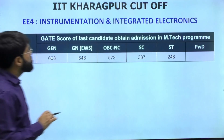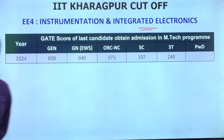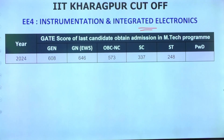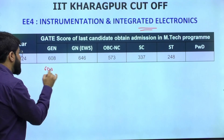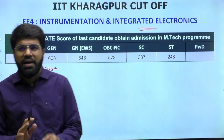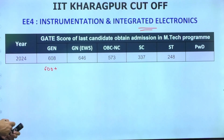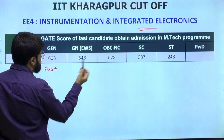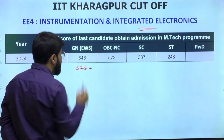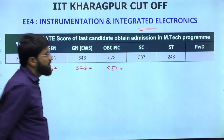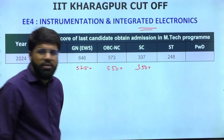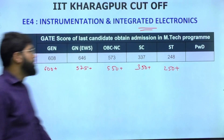The next is Instrumentation and Integrated Electronics, which has a decent placement record at IIT Kharagpur. The last year General cutoff was 608. Safe score recommendations: General - 600+ (575+ can also try), EWS - 575+, OBC - 550+. For SC, last year it was 337 but 350+ is the safer call for this year. ST - 250+.